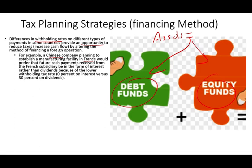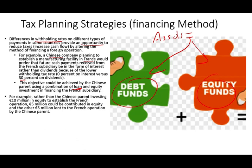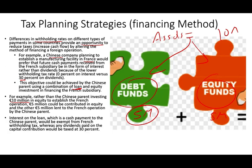If the French subsidiary pays the Chinese parent company in dividends, the French government will withhold 30%. So the objective for the Chinese company is to finance as much as possible with loans rather than equity. When the subsidiary pays interest on that loan and sends money to China as interest payments, they don't have to withhold 30%. Rather than the Chinese parent investing 10 million euros entirely in equity, they could invest 5 million in equity and 5 million as a loan — because when they send the interest payment, nothing is withheld. Interest on the loan, which is a cash payment to the Chinese parent, would be exempt from the French withholding tax, whereas any dividend paid on the capital contribution would be taxed at 30%.